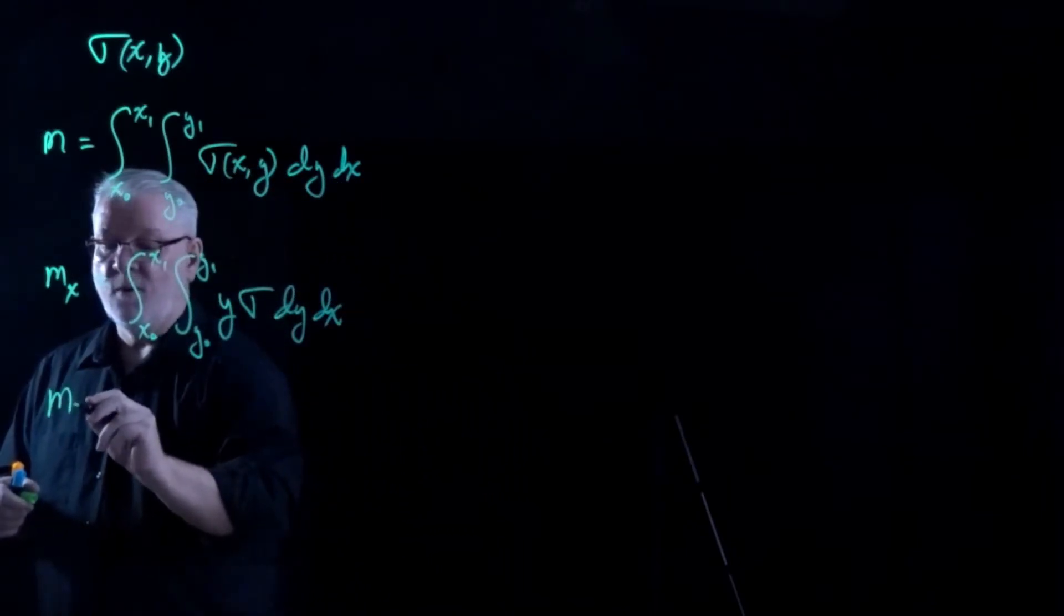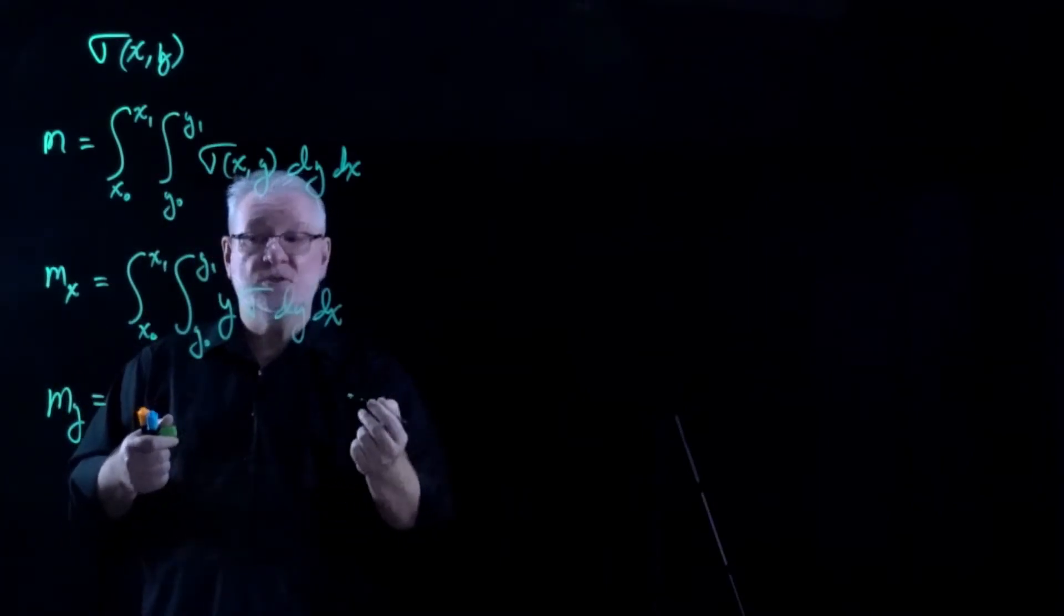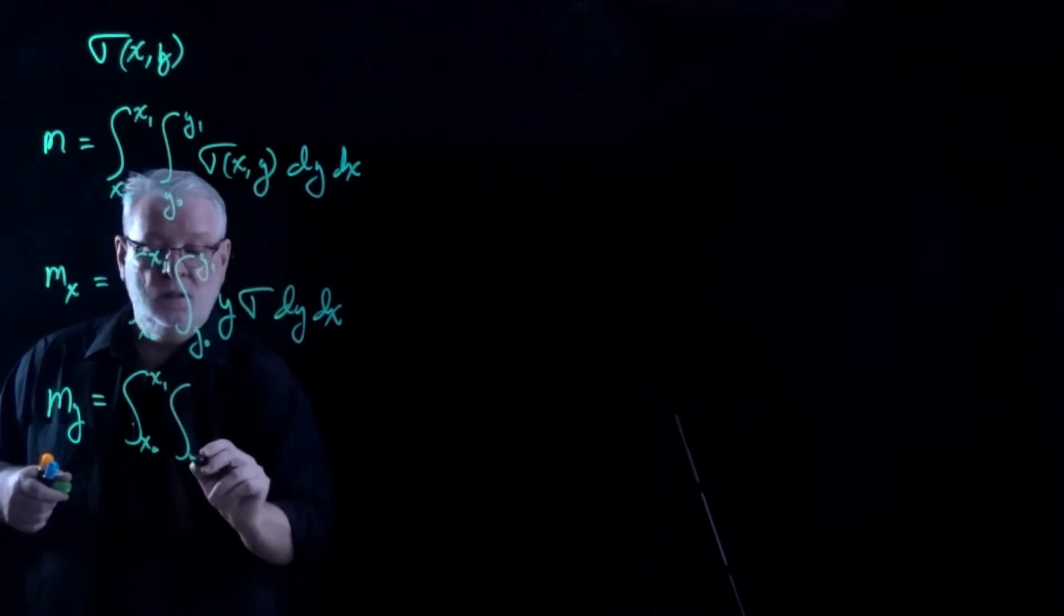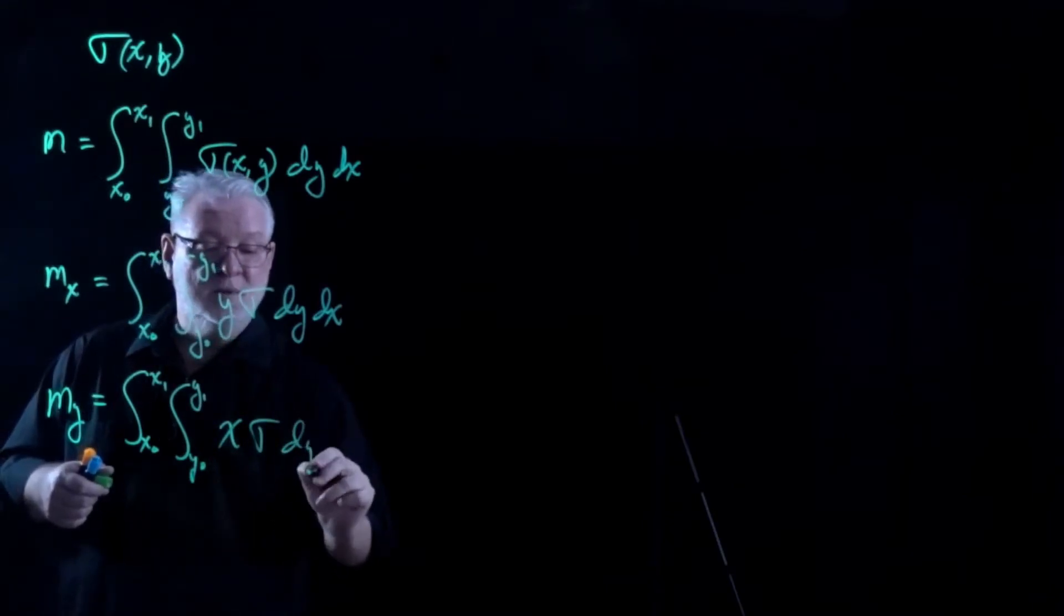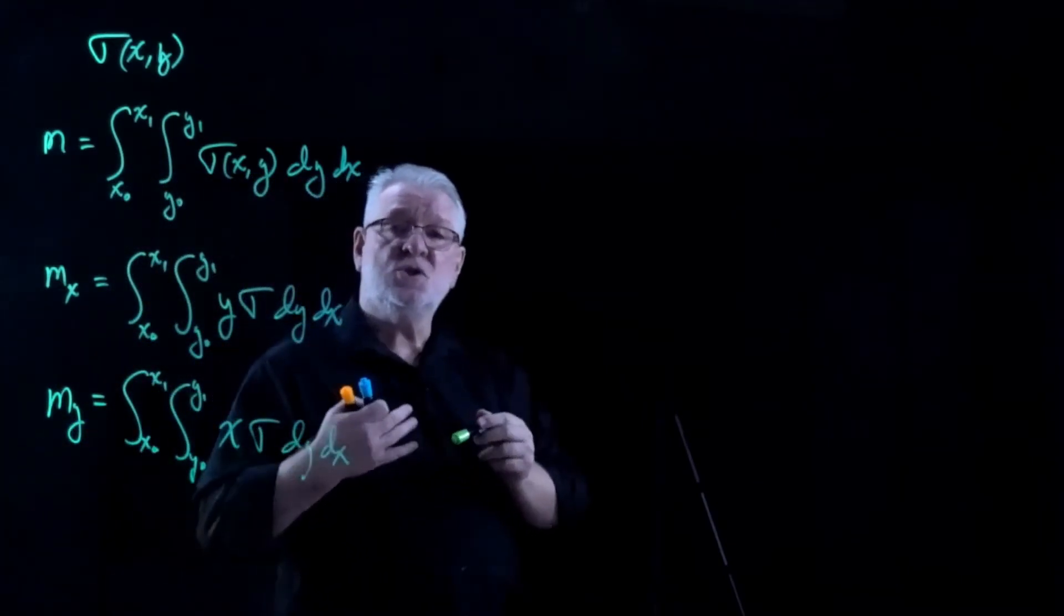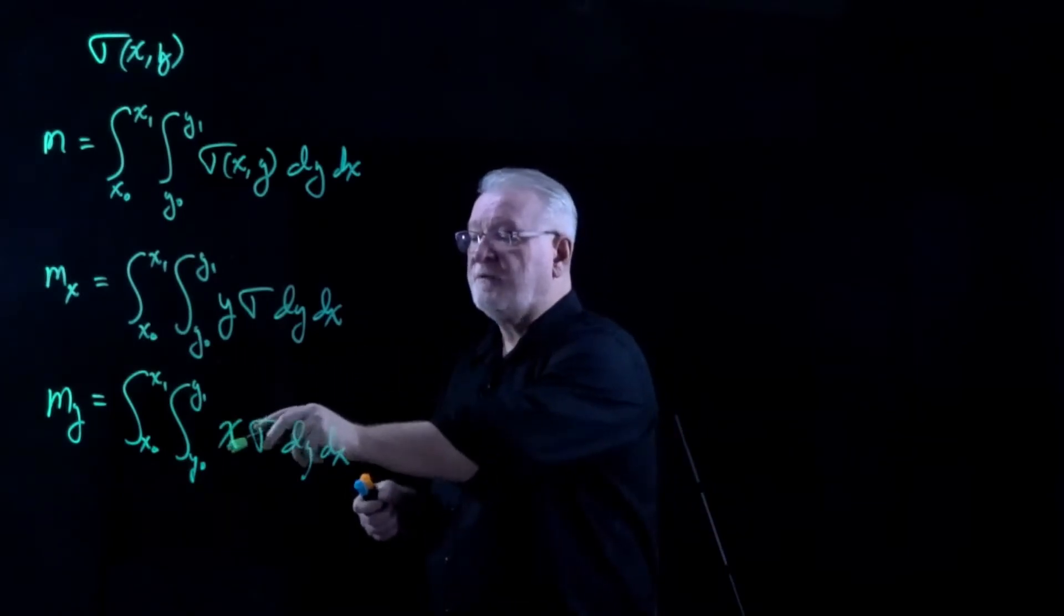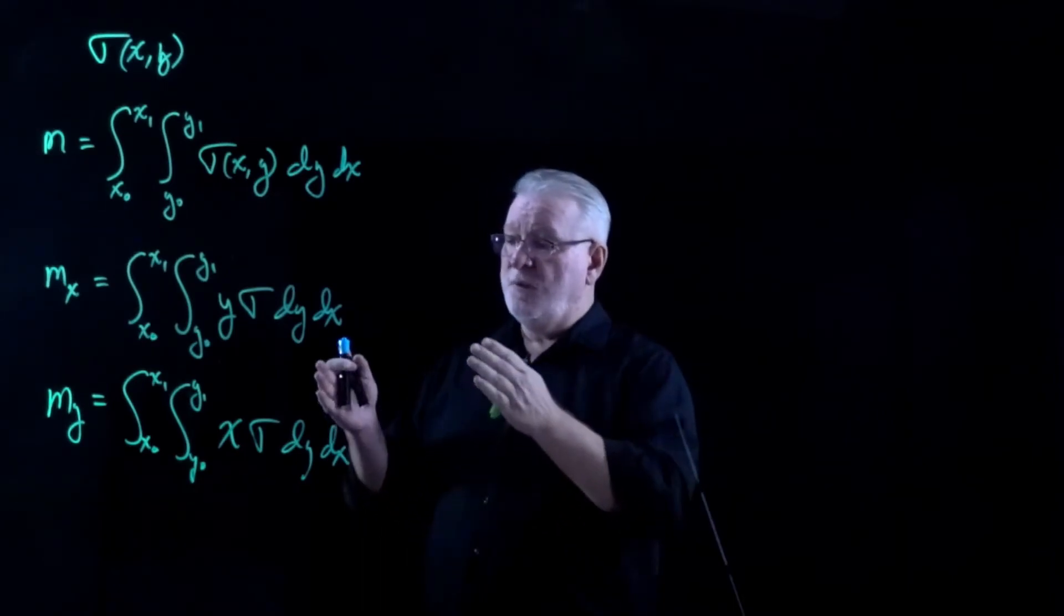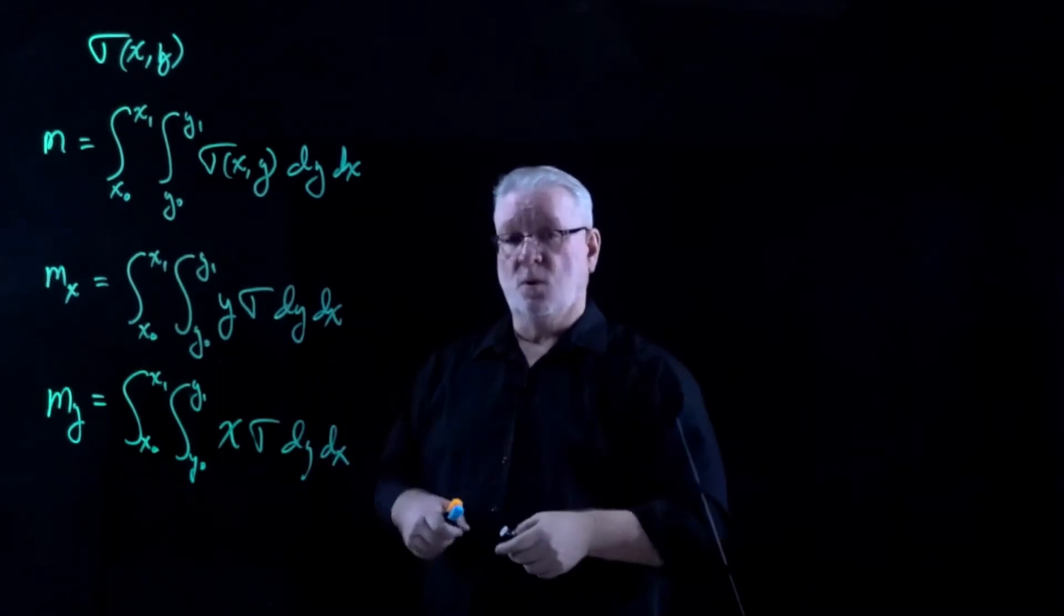Correspondingly then, MY, which is the moment around the Y axis where we're basically looking at the X distribution of mass, would be the same limits of integration. And now it's just X times sigma times dy dx. And as I indicated earlier, that's what kind of makes these two-dimensional center of masses a little bit easier. Of course, you're still going to have to worry about the limits of integration actually taking into account the shape. But the integrand, what you're actually integrating, is much simpler than if these were one-dimensional integrals.